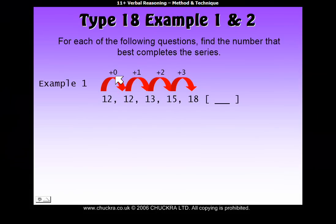So as you can see, the pattern's going plus nothing, plus 1, plus 2, plus 3. So what do you think the next thing is going to be? Yes, it's plus 4. So 18 plus 4 is 22. And that's your answer. The next number that comes in the series is 22.